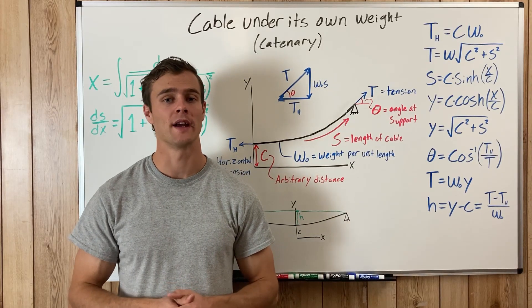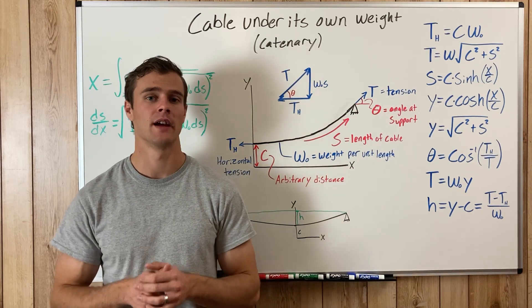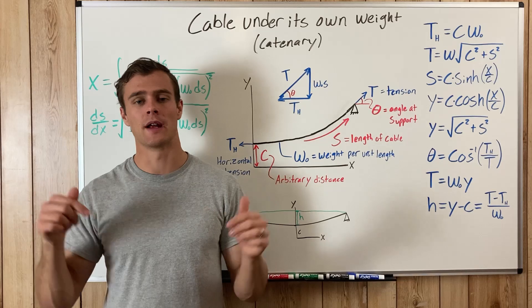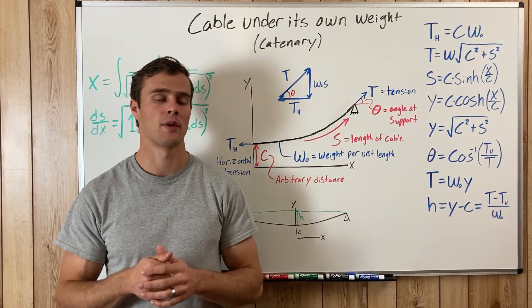A cable hanging under its own weight is called a catenary load, and we have to analyze them differently than distributed loads because they create a hyperbolic shape when they deflect, rather than a parabola which is the shape of a deflected distributed load.